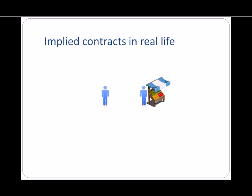To understand the idea of contracts, it helps to think of software components as if they were people. In the real world, whenever two people interact, there is either an implicit or an explicit contract governing the interaction.